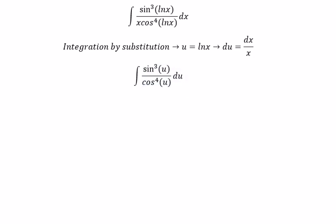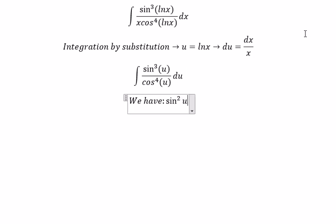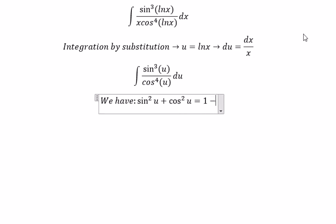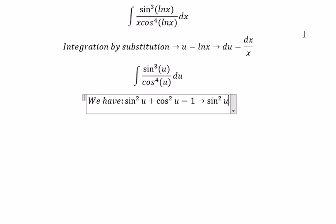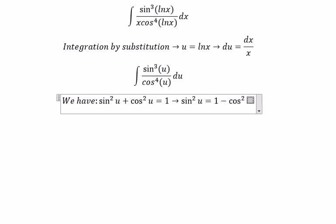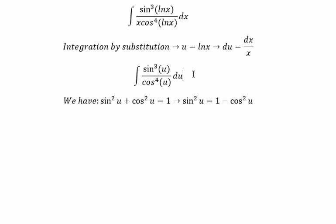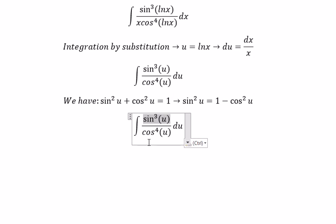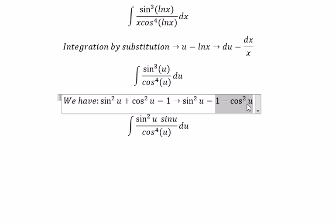Next, we use the identity: sine²(u) plus cosine²(u) equals 1. So we rewrite sine²(u) as 1 minus cosine²(u). We separate the integrand into sine²(u) and sine(u), then replace sine²(u) with 1 minus cosine²(u).